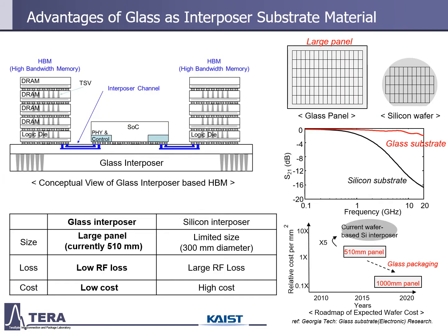Electrical performance of an interposer is determined by its substrate material. Currently, silicon is the material most often used in interposer fabrication. However, silicon interposers show significant signal loss at high frequencies. Glass, on the other hand, has advantages of low RF loss. Glass as an interposer material also offers large-size availability, enabling massive production through large panel fabrication. These are why using glass for the interposer substrate can be an alternative solution to address the limitations of silicon interposers. I therefore apply and analyze the glass interposer for the next-generation HBM.